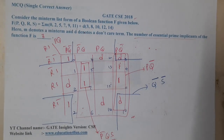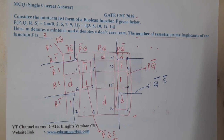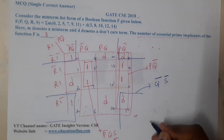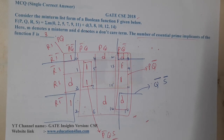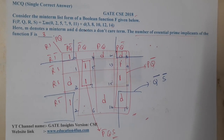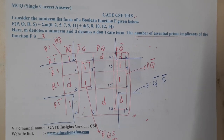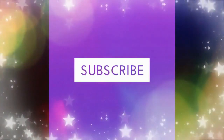There are no other prime implicants. There are a total of three essential prime implicants. I hope everyone got a clear idea with respect to this question. In the next lecture we will continue with the next question. Thank you — like, share, and subscribe for more awesome videos!